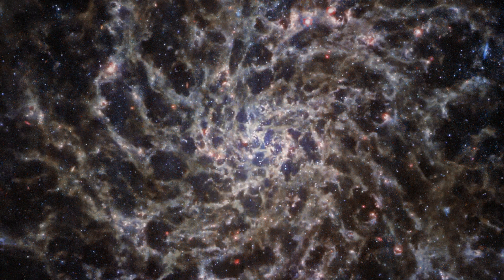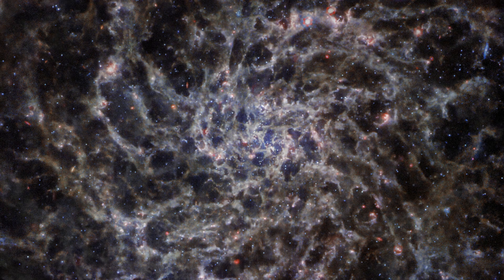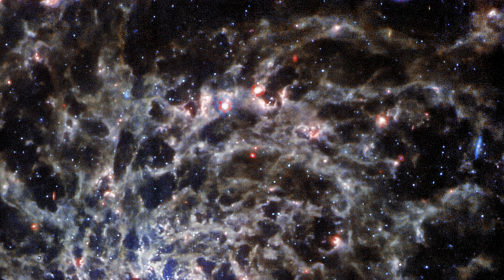Yet in the Webb image, those dusty regions are no longer dark. This is because mid-infrared light, captured by MIRI, can effortlessly penetrate the dust. It unveils a continuous tangle of structures echoing the shape of the spiral arms.